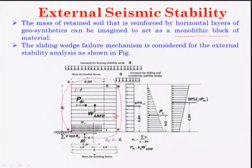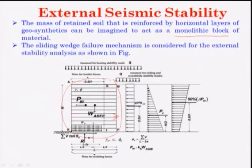The sliding wedge failure mechanism is considered for the external stability analysis. If you look at the figure, this is your mass of soil which has been reinforced by means of geosynthetic layers. It has been considered as one layer, and the center of gravity (CG) accounts for the unit weight of the soil. The weight of geosynthetic materials is considered unitless.